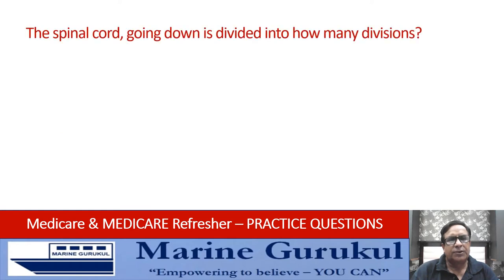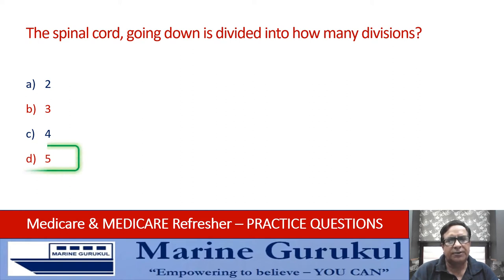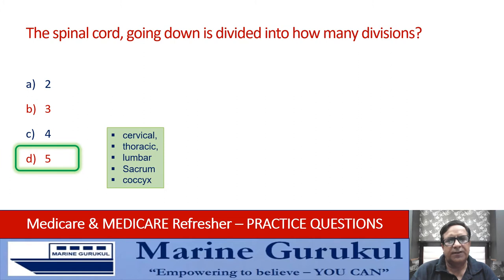The spinal cord going down is divided into how many divisions — 2, 3, 4, or 5? The answer is D — divided into 5 divisions. These 5 divisions are: cervical, thoracic, lumbar, sacrum, and coccyx.